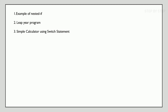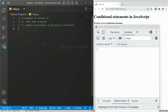We will see an example of nested if. We have seen simple if, else if, and also else if ladder, but we have not seen the example of nested if. We are going to see this. Similarly, we are going to see a leap year program, and finally we are going to make one simple calculator using switch statement. I have opened my VS Code editor, and we are going to see our first program — checking whether the number is positive, negative, or zero — but this time using nested if.